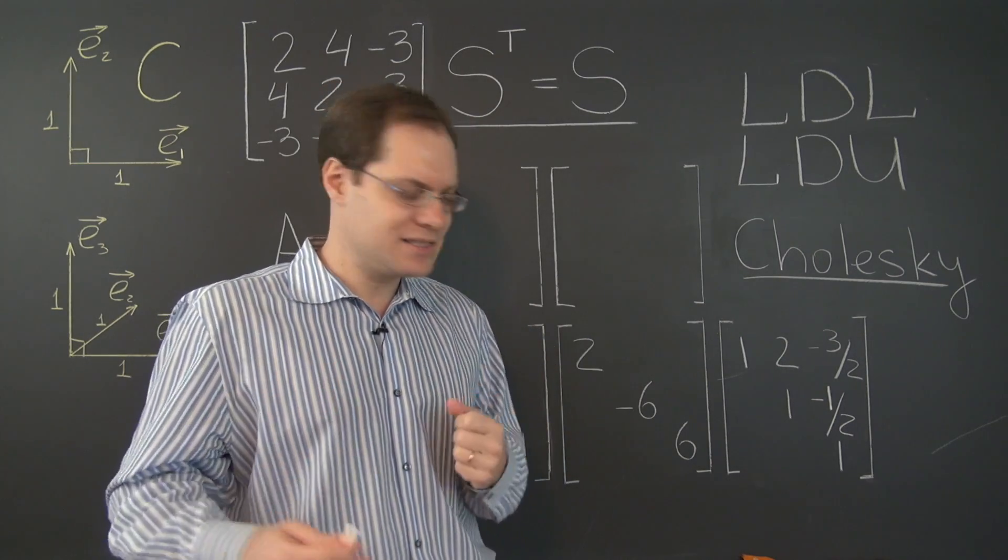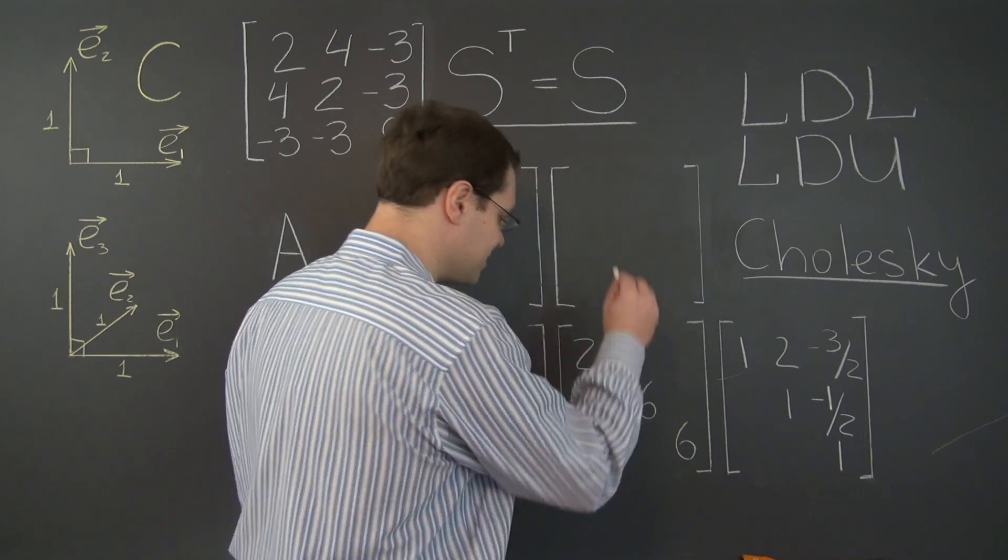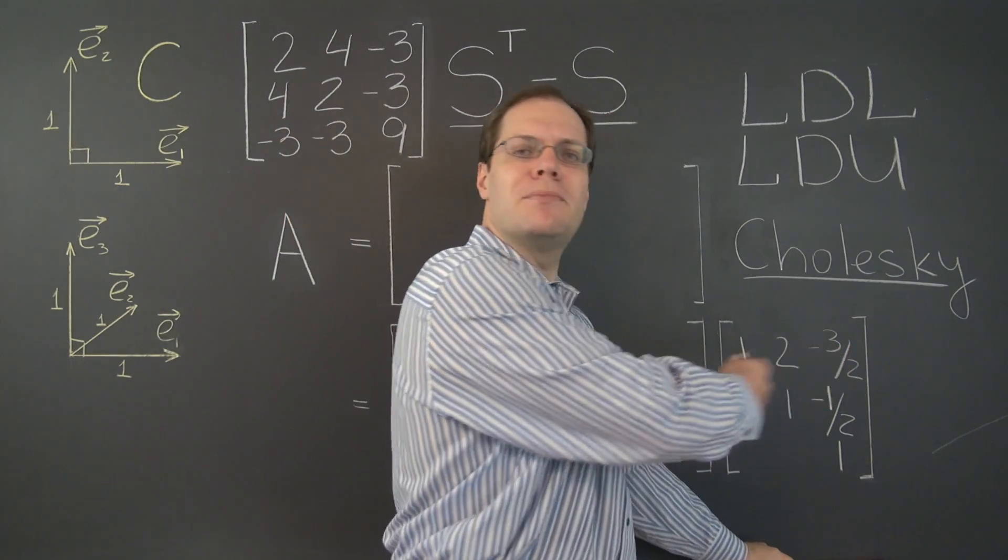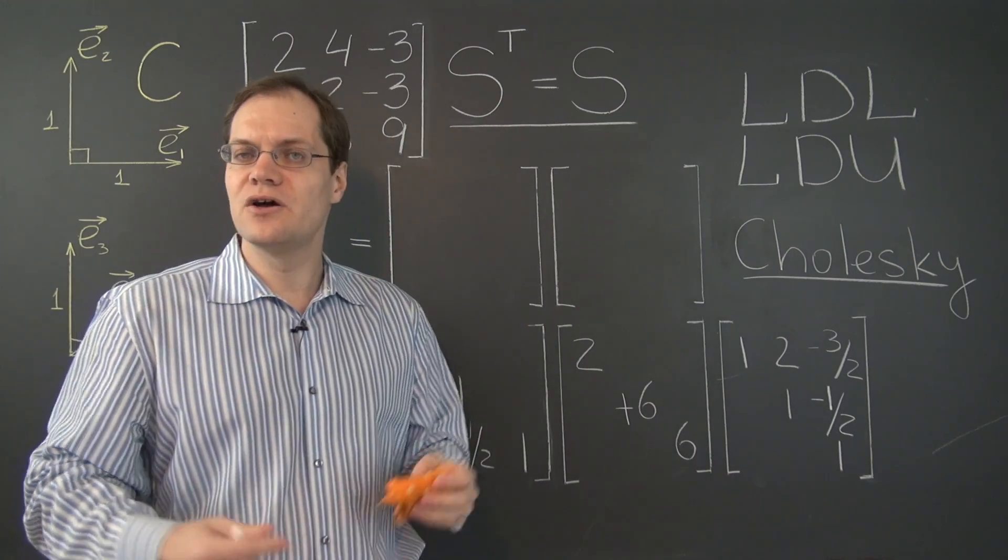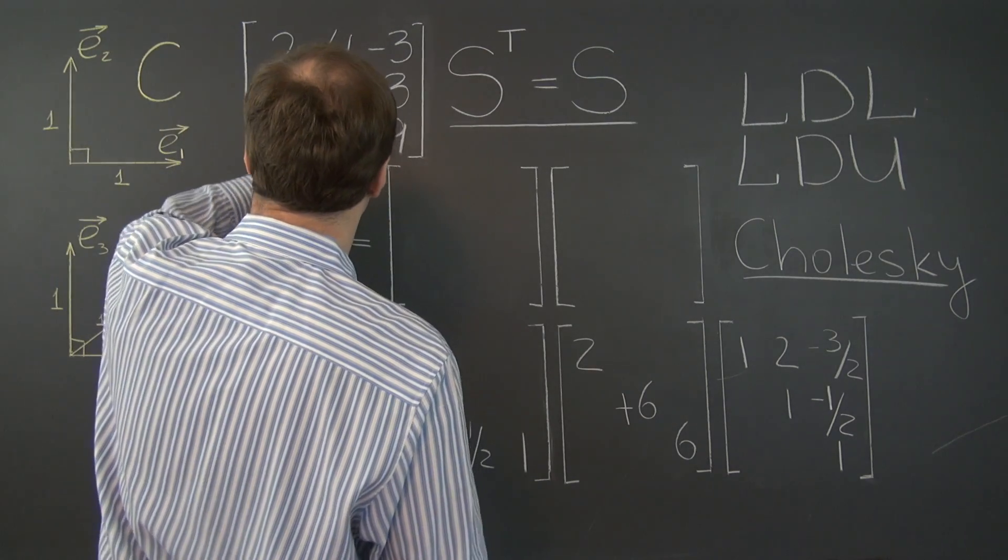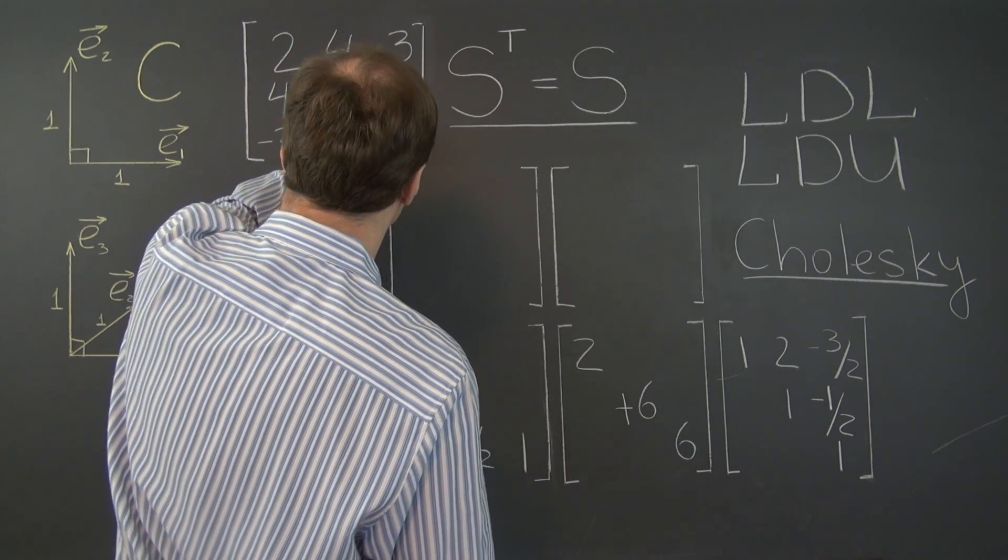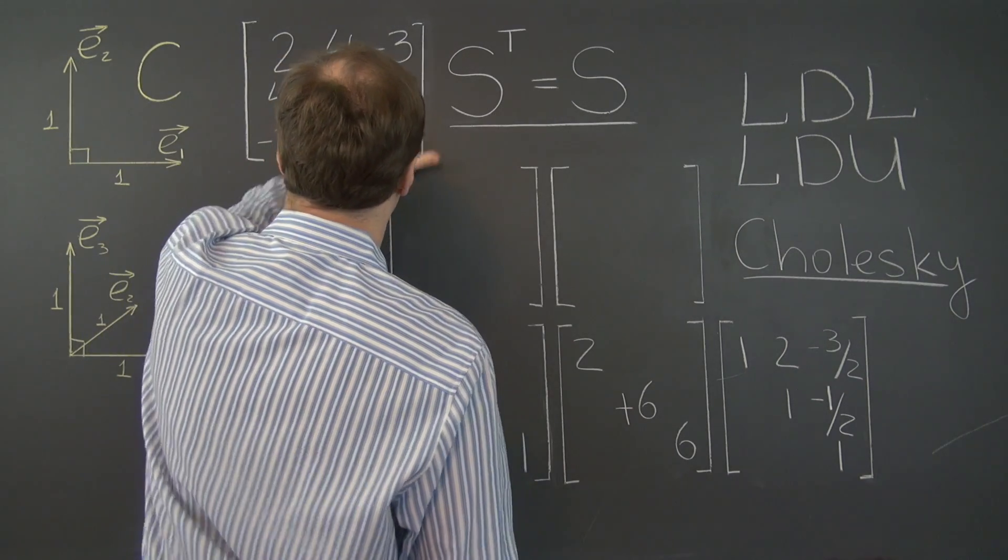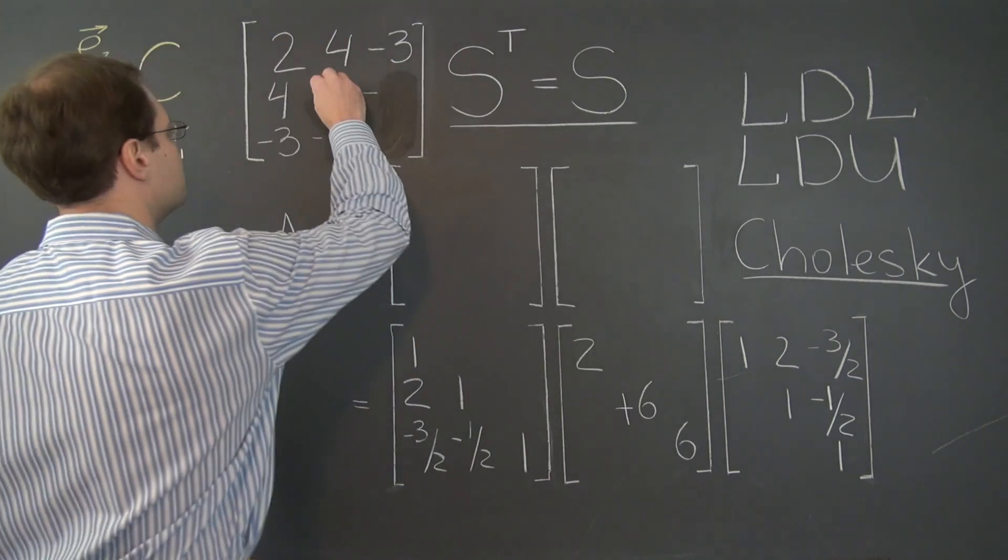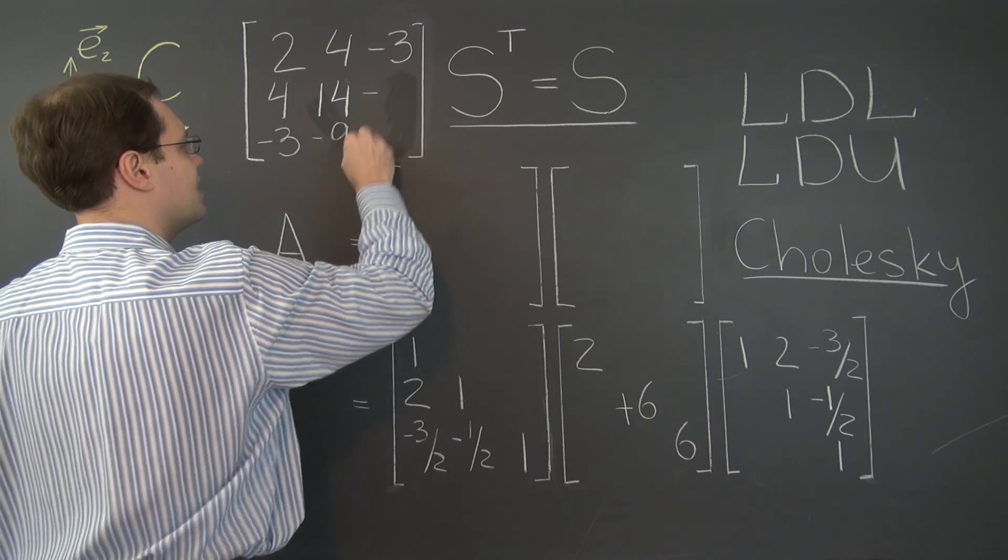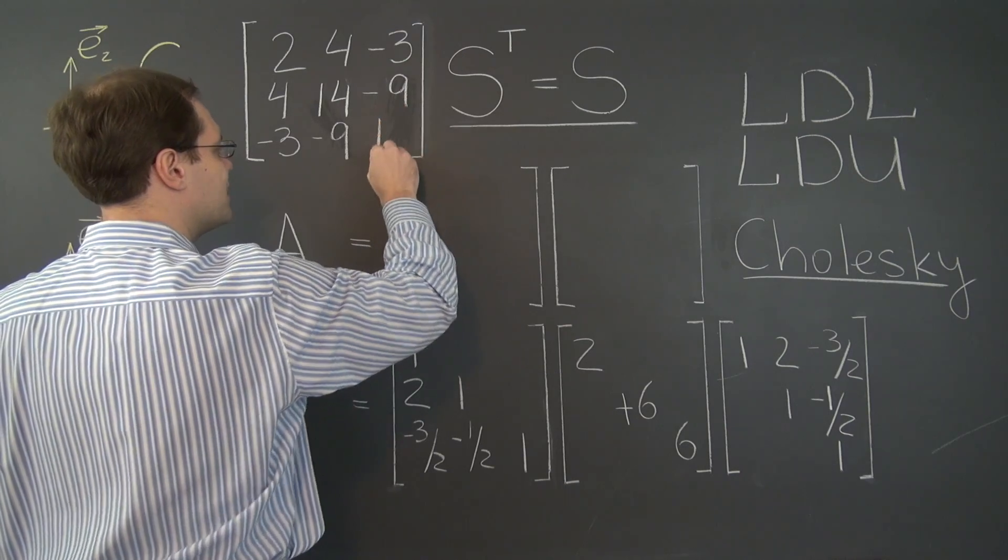So in this video, we'll consider a different matrix with a positive pivot. So to determine what matrix that is, you just have to multiply these matrices together, which I did before recording this video. And it is this matrix. So these numbers change. All right, let's see. So this middle entry becomes 14. This is negative 9, negative 9, and 12.